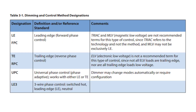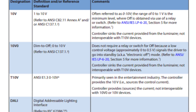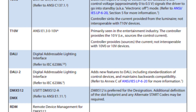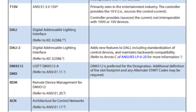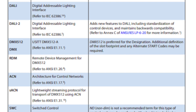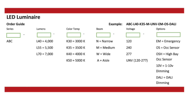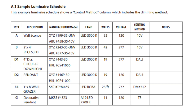The document includes a table that describes the most common open source protocols used to control both solid state and legacy sources. It also includes examples of how designations should be included in both manufacturer's cut sheets and specifier's fixture schedules.